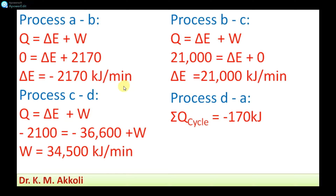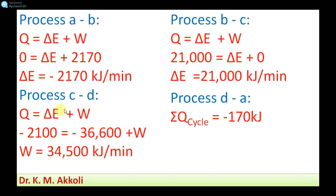For process B-C, we apply the first law: Q equals delta E plus W. The rate of heat transfer is 21,000 kilojoules per minute and work transfer is zero, since in this process combustion is taking place and the work transfer is given as zero. Therefore, delta E equals 21,000 kilojoules per minute.